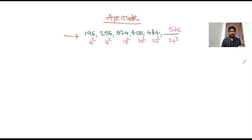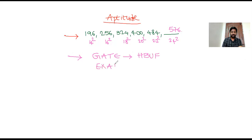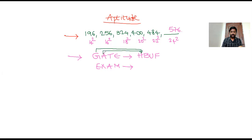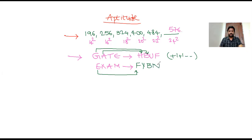Aptitude is not a subject; it's something that comes by birth. Sometimes they give you: in a certain code language the word GATE is coded as HBUF, then what is the code for the word EXAM? You just compare letter by letter — each letter is increasing by one. So E+1=F, X+1=Y, A+1=B, M+1=N. No formula needed — this is aptitude.